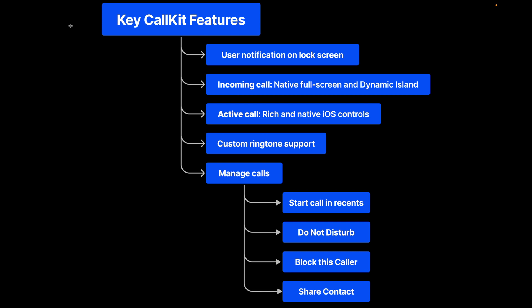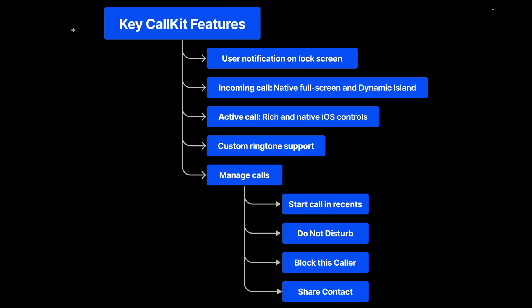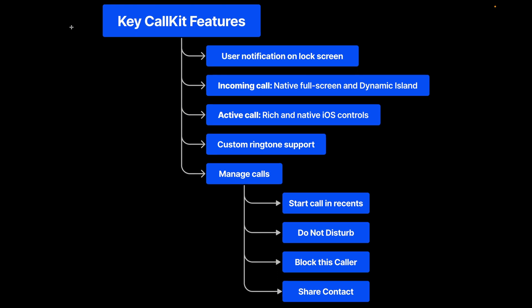Let's look at some key features of CallKit. When you integrate it with your app, it shows user notifications on the lock screen. During an incoming call, you get the full-screen UI, and it also shows in the dynamic island on iPhone 14 Pro or 14 Pro Max. During an active call, you get rich native iOS controls. CallKit also has ringtone support, and you can manage calls from the Calls Recents category, where you can perform actions such as do not disturb, block a user, or share contact.